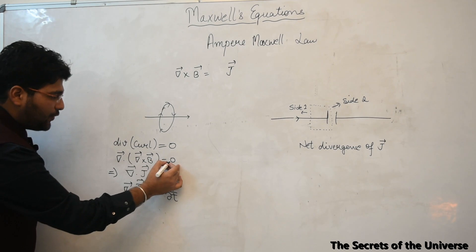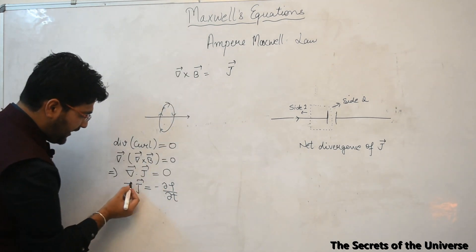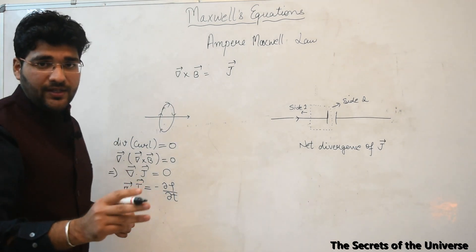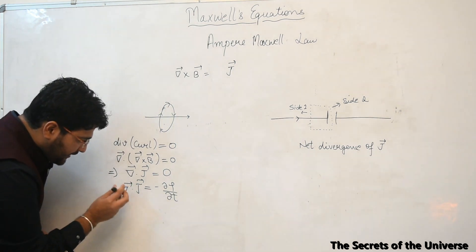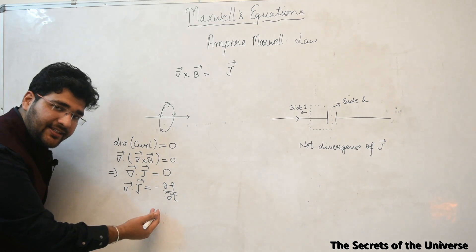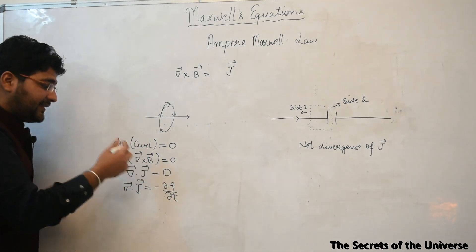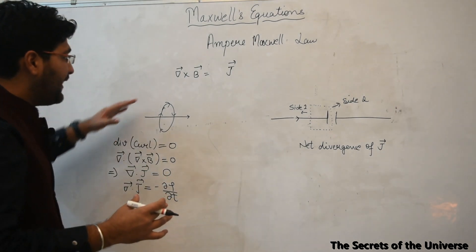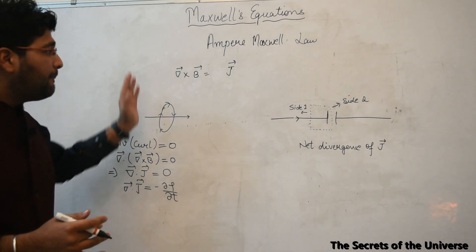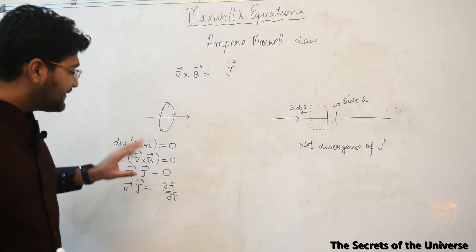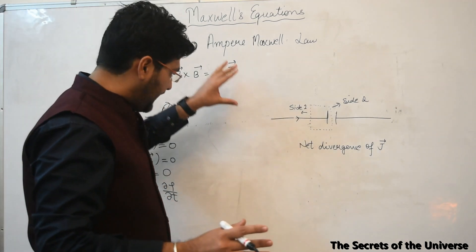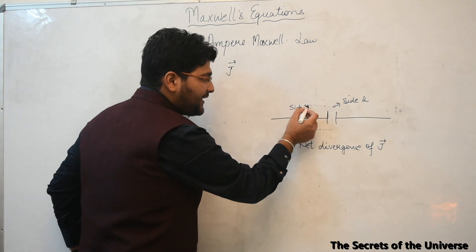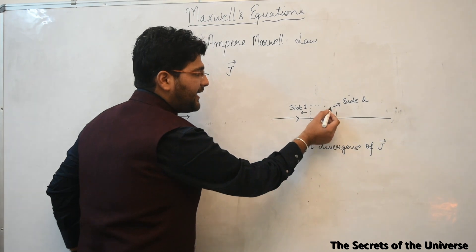Taking the divergence of both sides implies that the divergence of J (del dot J) should also be zero. But the continuity equation in electrodynamics says the divergence of current density equals the negative rate of change of charge density — meaning the divergence of J is non-zero. This is a paradoxical situation: the left-hand side gives zero but the right-hand side divergence of J is non-zero. This was the theoretical flaw in Ampere's original law.